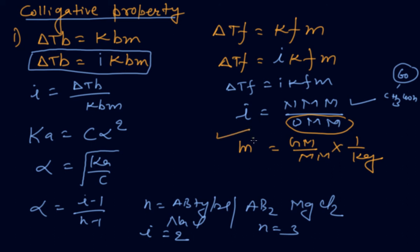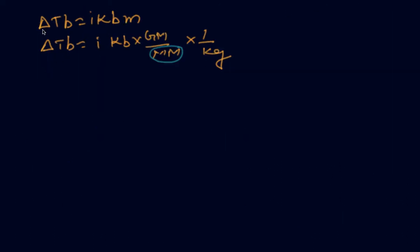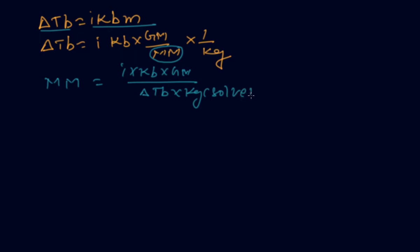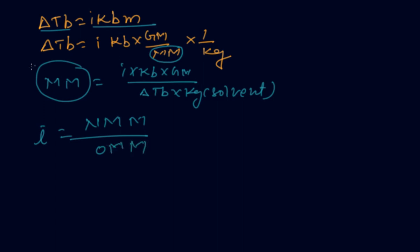From ΔTb = i·Kb·m, you can find the observed molar mass. Rearranging: observed molar mass = (i·Kb × given mass) / (ΔTb × kg of solvent). Then i = normal molar mass / observed molar mass. Putting in the values from the formula lets you solve the numericals. If you have any difficulty with numericals, please contact me — I will provide some numericals in the next classes.